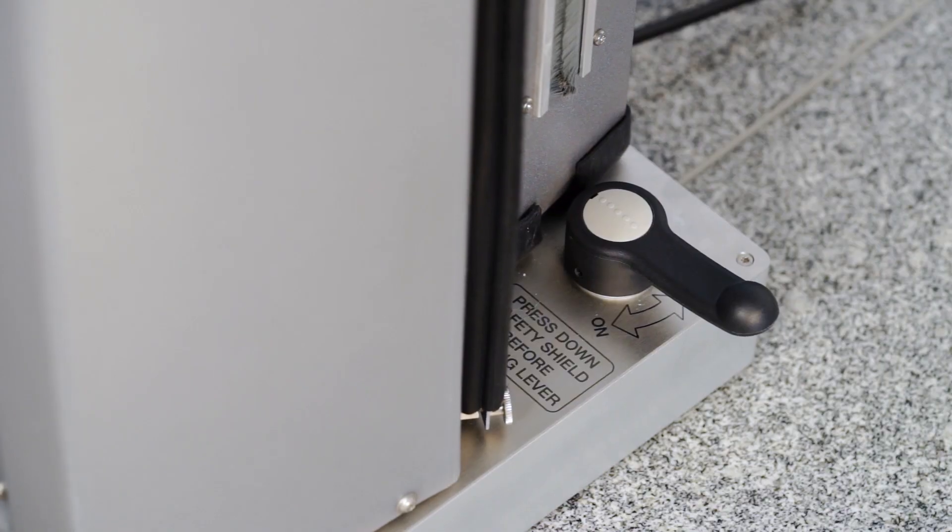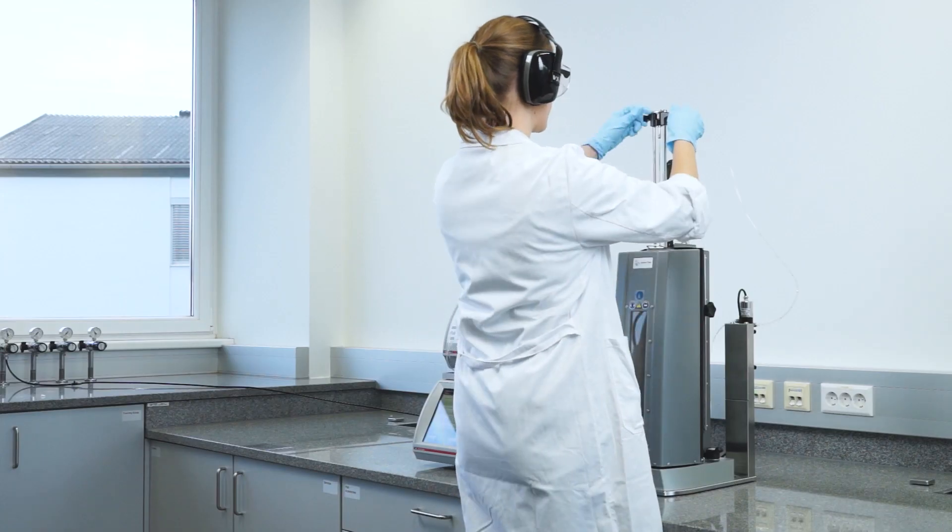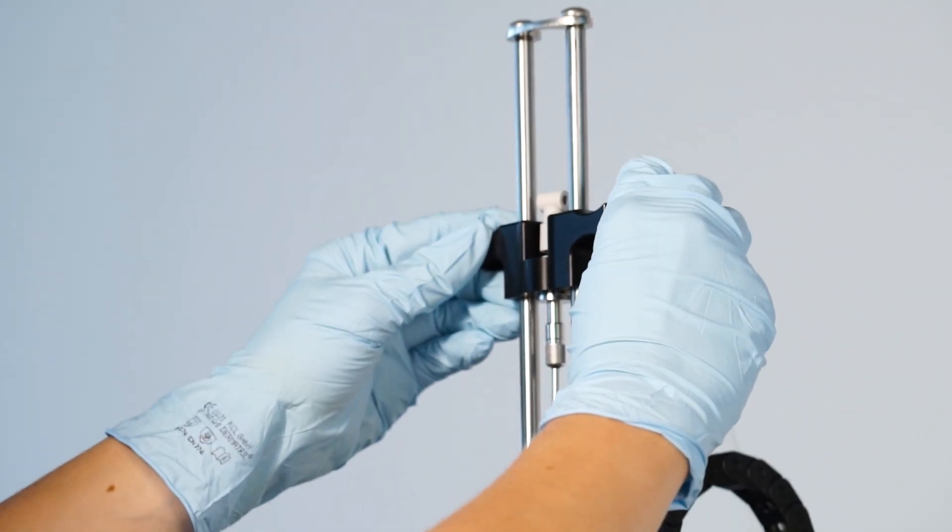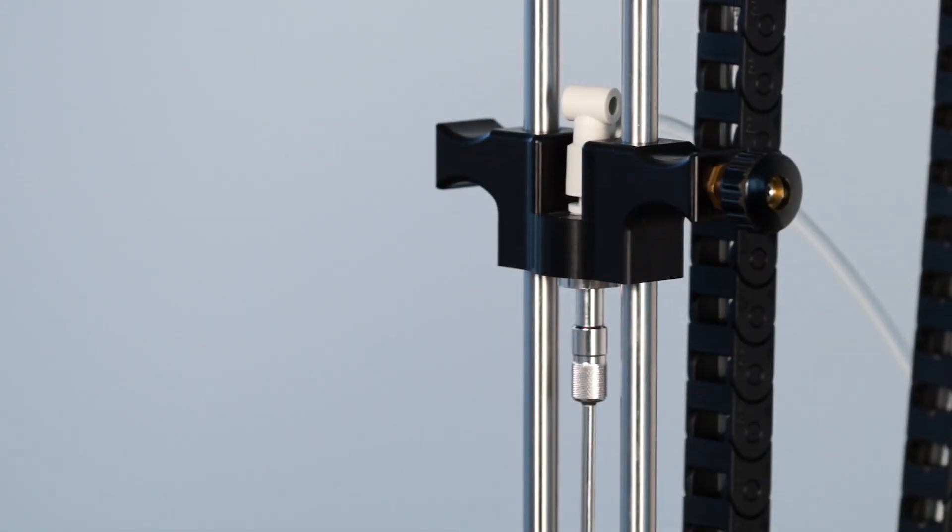Close the safety shield and pull the lever towards you in order to apply pressure. Now the container is pierced and you can lower the filling tube. Please secure its position to be ready for sample transfer.